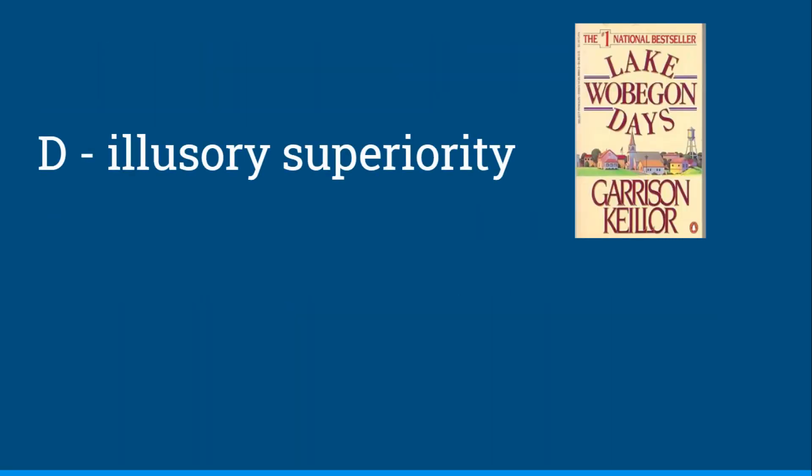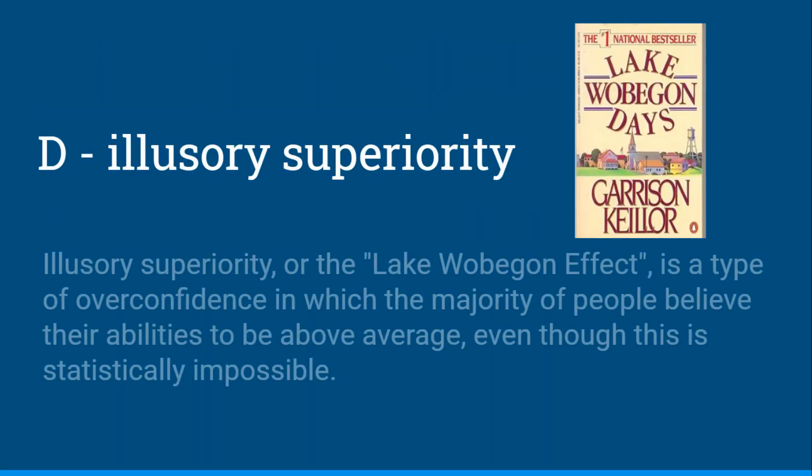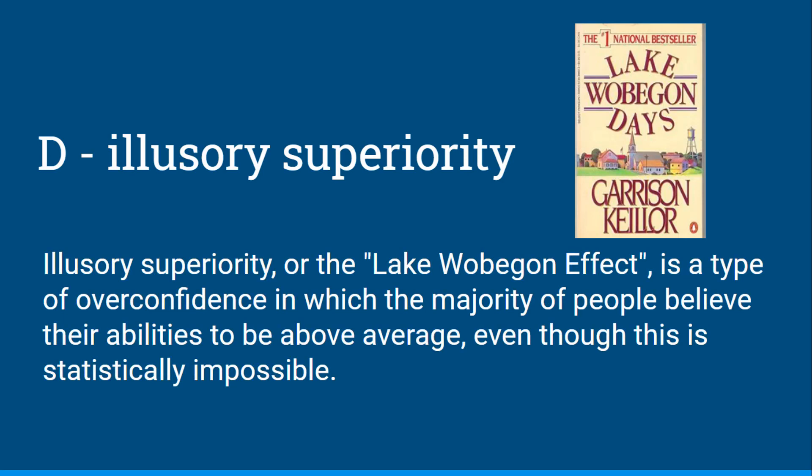And this would be D, illusory superiority. Illusory superiority, or the Lake Wobegon effect, is a type of overconfidence in which the majority of people believe their abilities to be above average, even though this is statistically impossible.